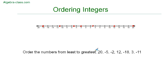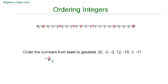Once my numbers are plotted on the number line, I can order them. The numbers that are the smallest are going to be farthest to the left — the farthest away from zero on the left-hand side. So we have negative 18 first,